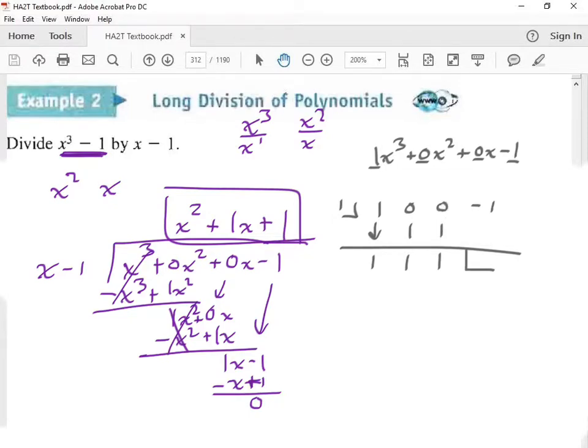So you get 1 again. 1 times 1. Man, look at all these 1s. Uno. All right. Now we've got our remainder of 0 at the end.